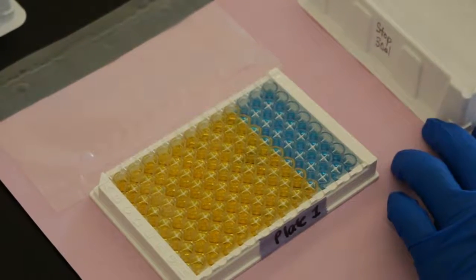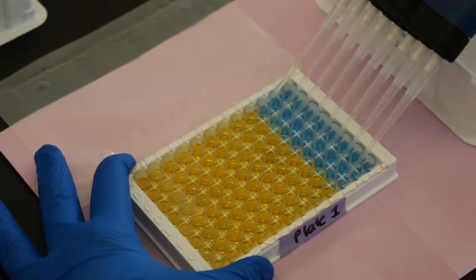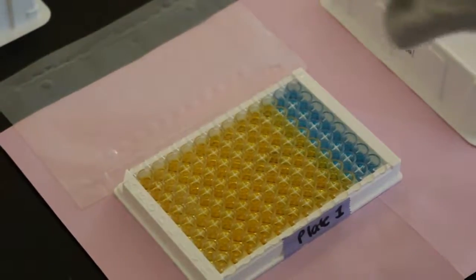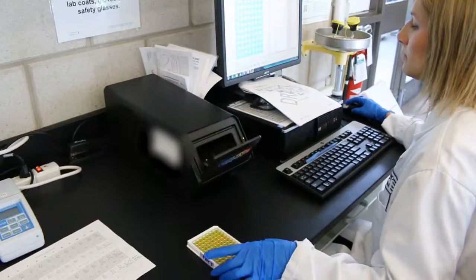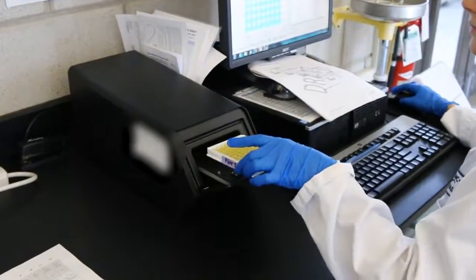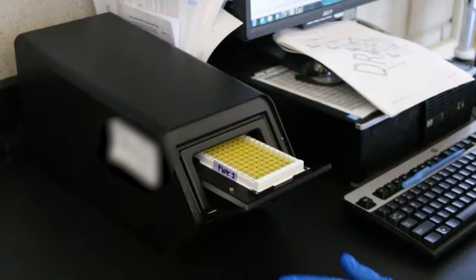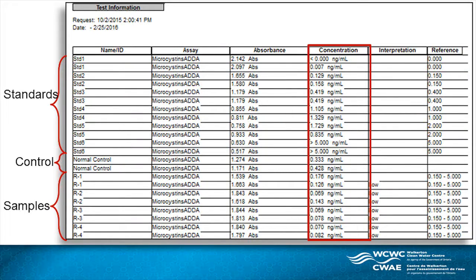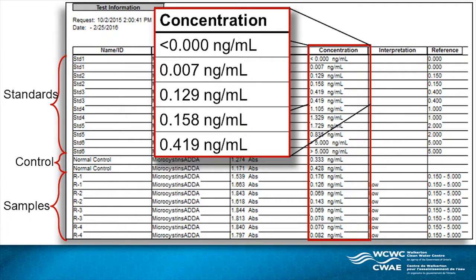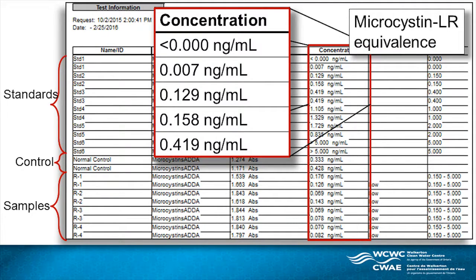The plate must be read by the ELISA photometer within 15 minutes of the stop solution being added. The plate is loaded onto the photometer tray and is analyzed when initiated by the software. The tray is read once at 450 nanometers and again at 630 nanometers. Test results can be viewed on the reader software program and are expressed as microcystin LR equivalents.